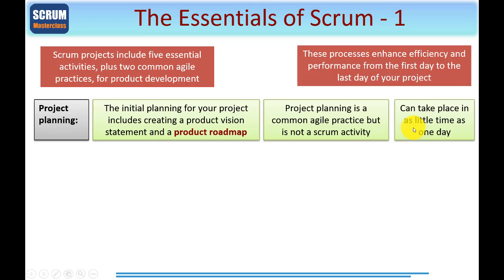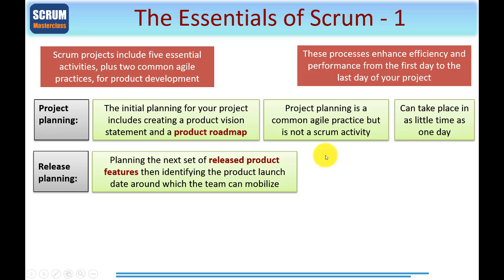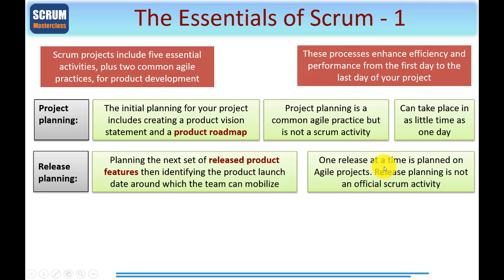Project planning can take place in as little time as just one day — perhaps a one-day workshop would get the job done. When we talk about project planning in a PRINCE2 context, you'll automatically think of documents and Gantt charts. Scrum does something a little different, but we can in fact connect them together. Next up, release planning — this is where you plan the next set of released product features and identify the product launch date. One release at a time is planned on Agile projects. Release planning is not an official Scrum activity, but what we'll be using is Extended Scrum, which includes this activity and allows it to dovetail nicely into PRINCE2.